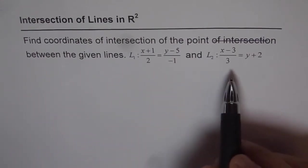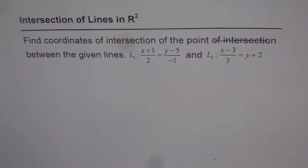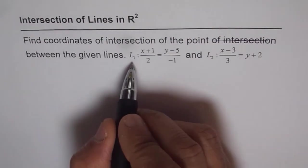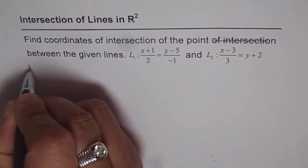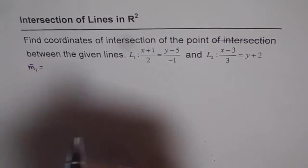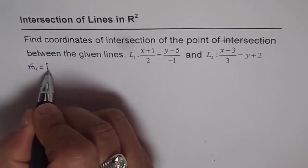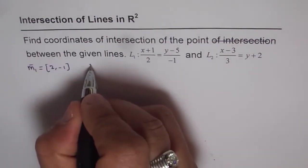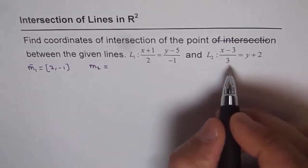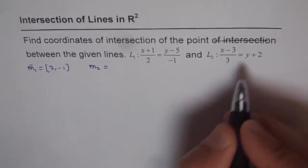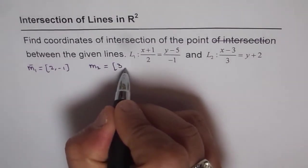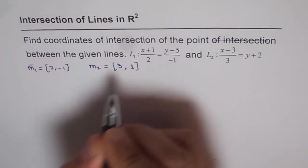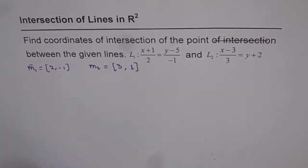Now for lines to intersect they should not be parallel, so let's check that part first. The direction number for L1 is M1 = (2, -1), and for L2 it is M2 = (3, 1). These are not scalar multiples and therefore the lines will intersect.